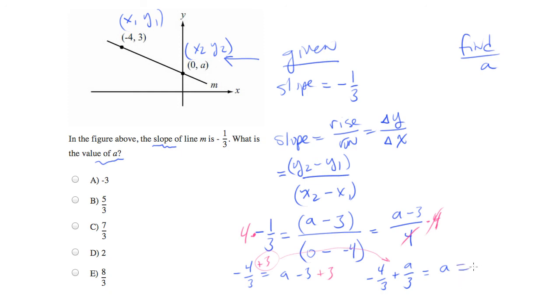And negative 4 thirds plus 9 thirds is going to be equal to 5 thirds, which will be our answer. Note, we found a match. We're looking for A. And 5 thirds is answer choice B.